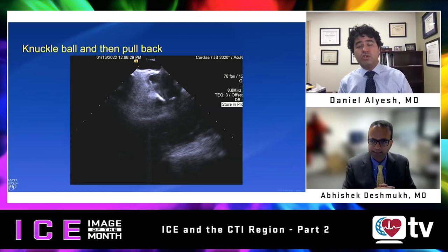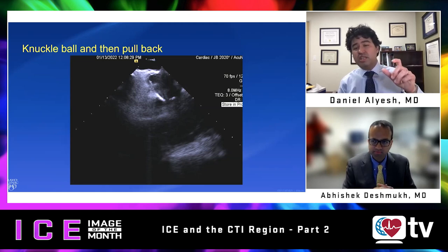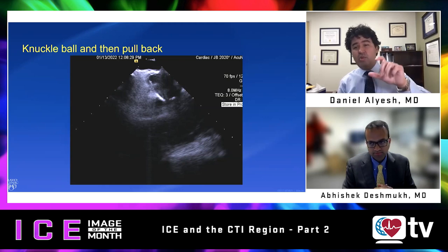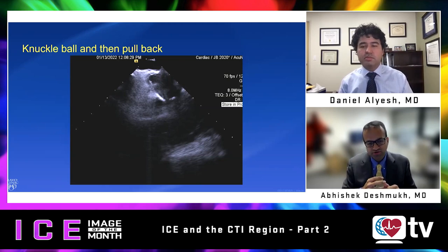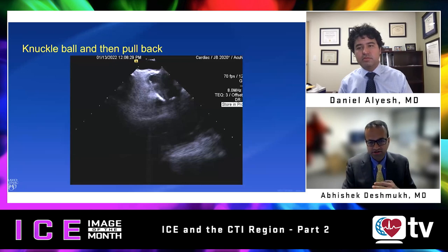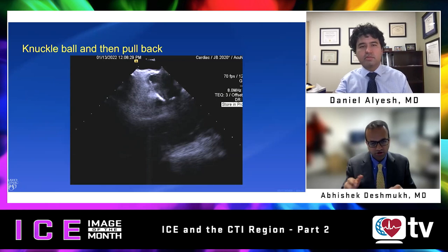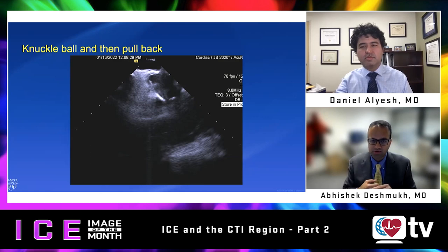Regarding the deflectable sheath: for a straight CTI ablation, a standard SRO sheath would be used. But if it is happening after an AF ablation, a steerable sheath is generally already in use for the AF ablation, and you can then use that steerable sheath to make these curves and have good contact while ablating.